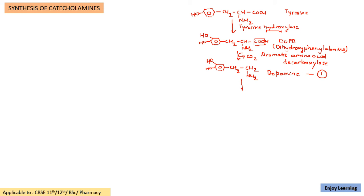Dopamine, by use of the enzyme dopamine beta-hydroxylase, is going to get converted into the second catecholamine: norepinephrine. The enzyme hydroxylase means a hydroxyl group is going to be added on the beta carbon atom. The carbon atom attached to the amine is the alpha carbon atom, and the second carbon atom is the beta carbon atom. So on the beta carbon atom there will be addition of a hydroxyl group. This is the catechol nucleus.